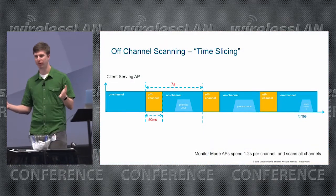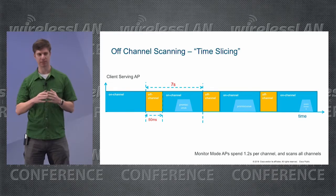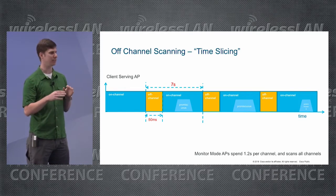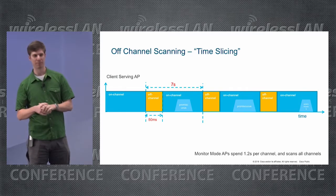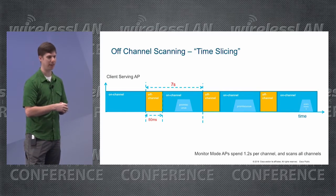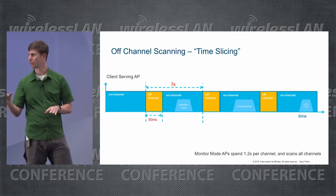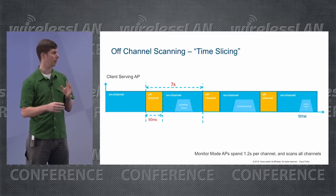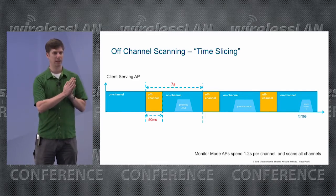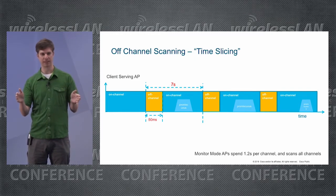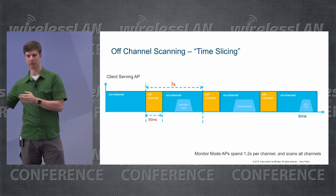So how frequently is the AP actually going off-channel? This is Cisco world — I assume it's somewhat similar for other vendors — but basically the access point is time-slicing between serving clients and going off-channel. For Cisco, the default interval is the AP serves for about seven seconds, then goes off-channel for 50 milliseconds, and then comes back on channel.